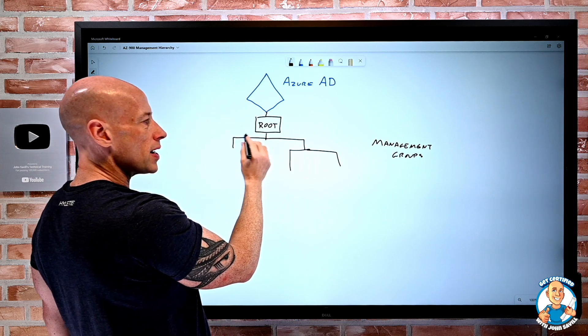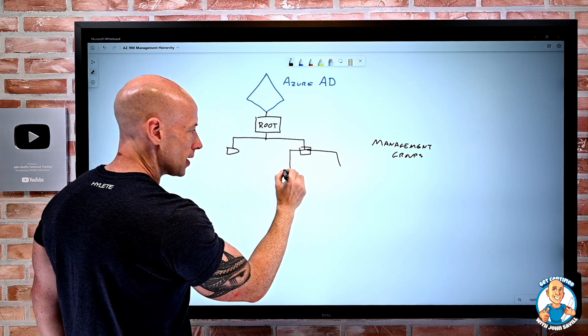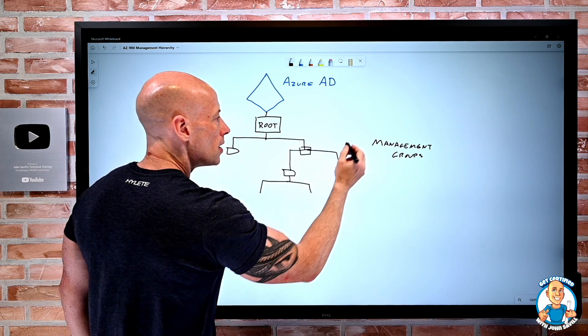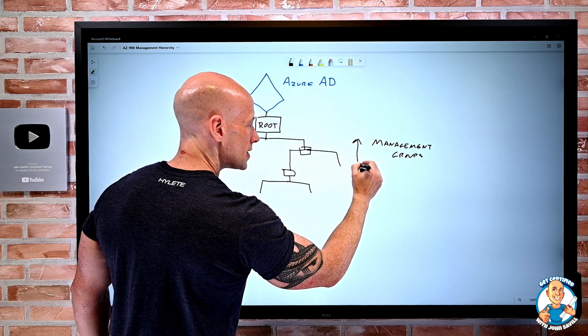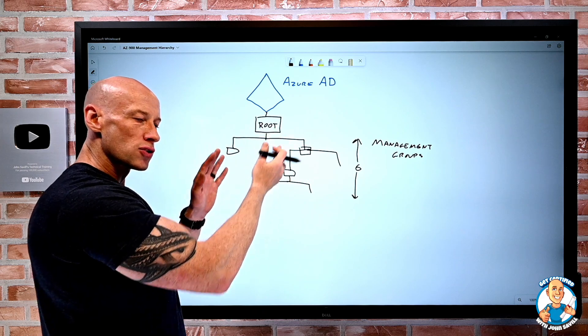And these can be not including the root. I have all these management groups forming the hierarchy. This can be up to six levels. So I can have an additional six levels of management groups.